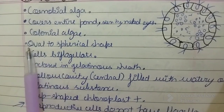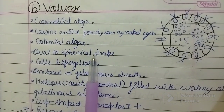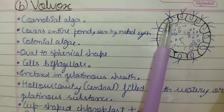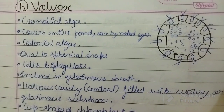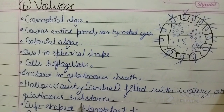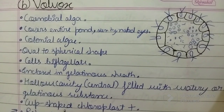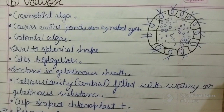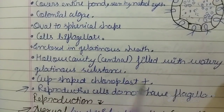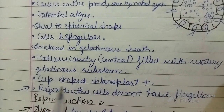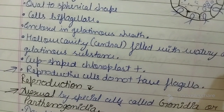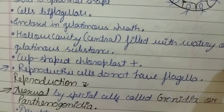These colonies are oval to spherical in shape. These cells are biflagellated — each individual cell is biflagellated and enclosed in a gelatinous sheet. This cavity is hollow and is filled with watery or gelatinous substances. The chloroplast is cup-shaped. Reproductive cells, however, do not have flagella.